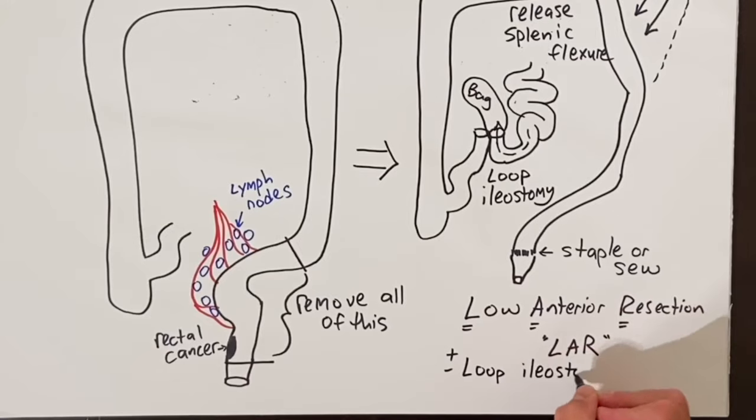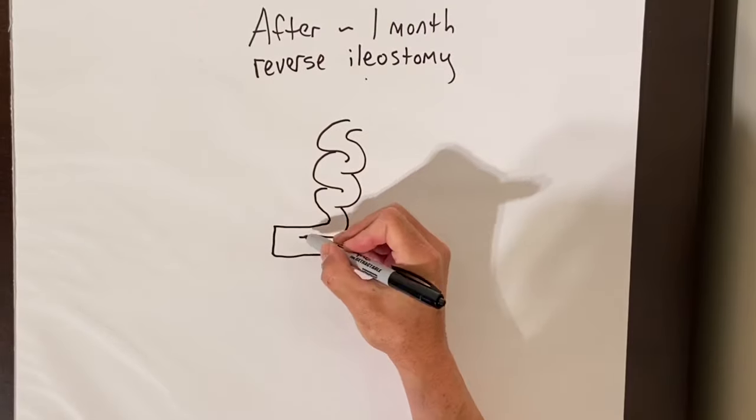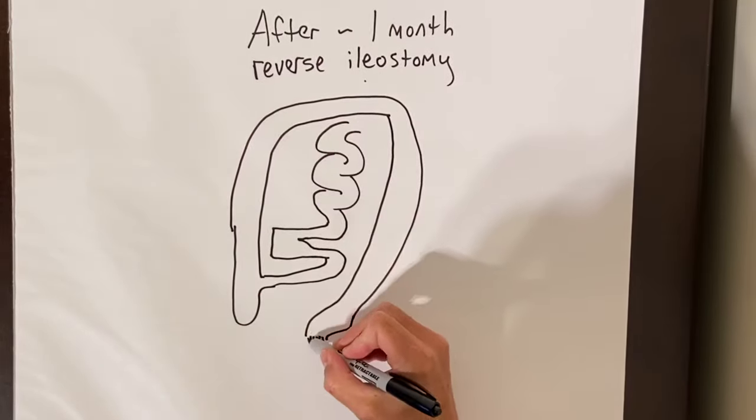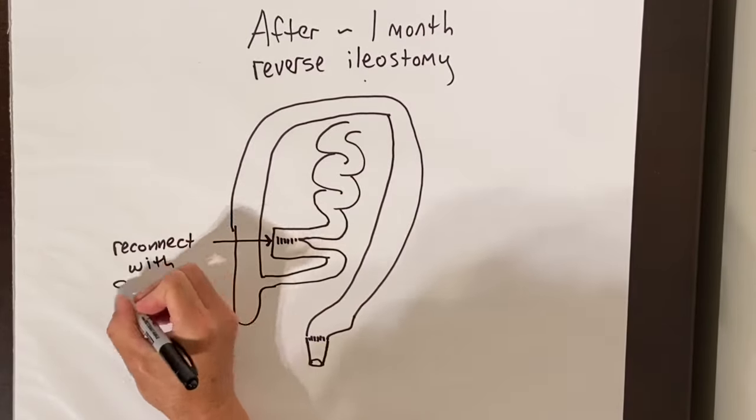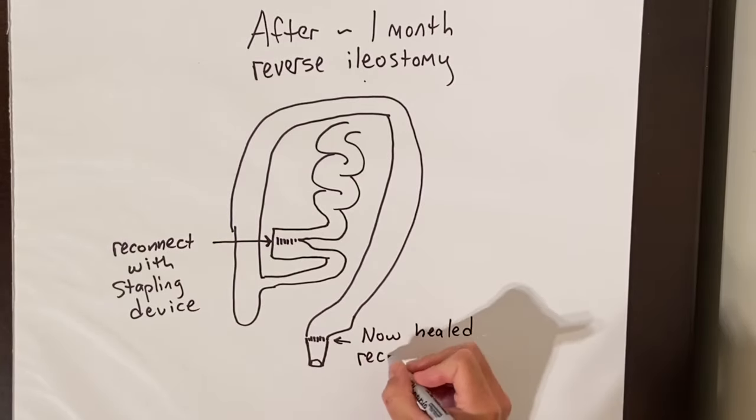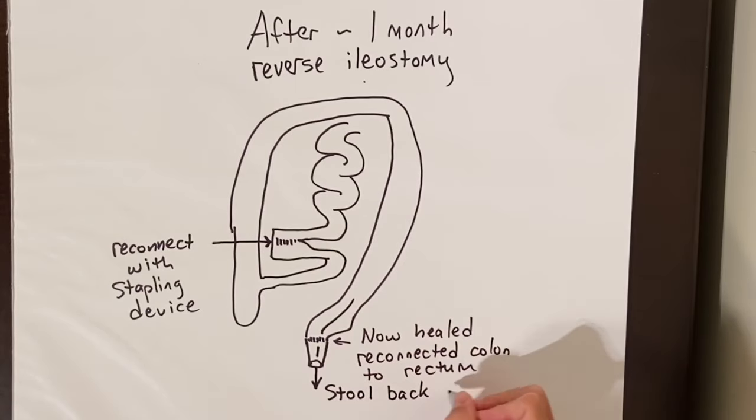The stool comes out of the end of the small intestine into a bag. After several weeks or months, a surgery can be done to reconnect the small intestine, and stool will go back through the colon and out from the now healed reconnected colon and rectum. We wait a minimum of several weeks for two reasons: one is to allow time for the reconnected colon and rectum to heal, and also to allow the scar tissue around the ileostomy to soften up.